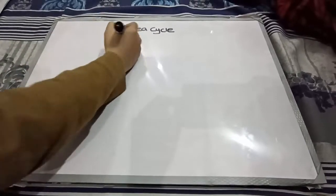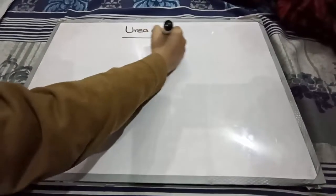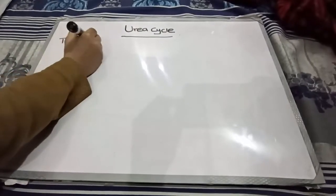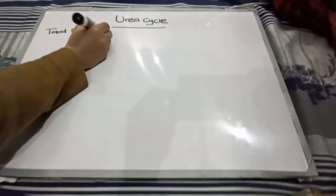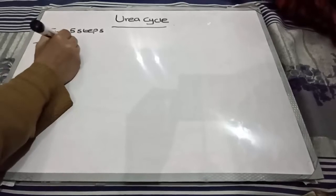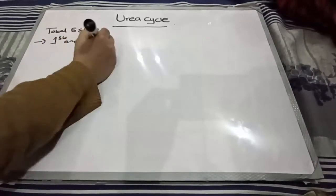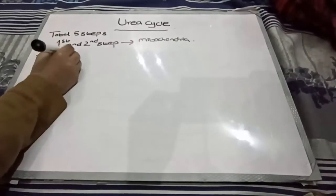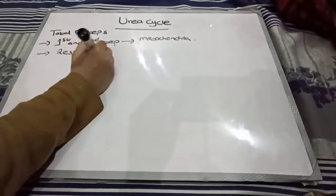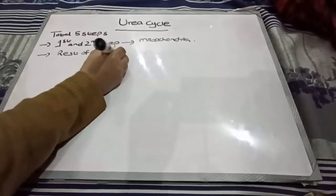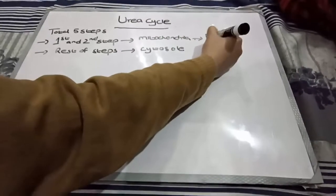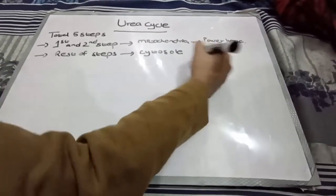In this video, we will discuss about the urea cycle and how urea is formed in our body. There are total 5 steps in the urea cycle. Among them, the 1st and 2nd steps take place in mitochondria, whereas the rest of the steps take place in cytosol. You know that mitochondria is known as the powerhouse of the cell. Cytosol is the cytoplasm.